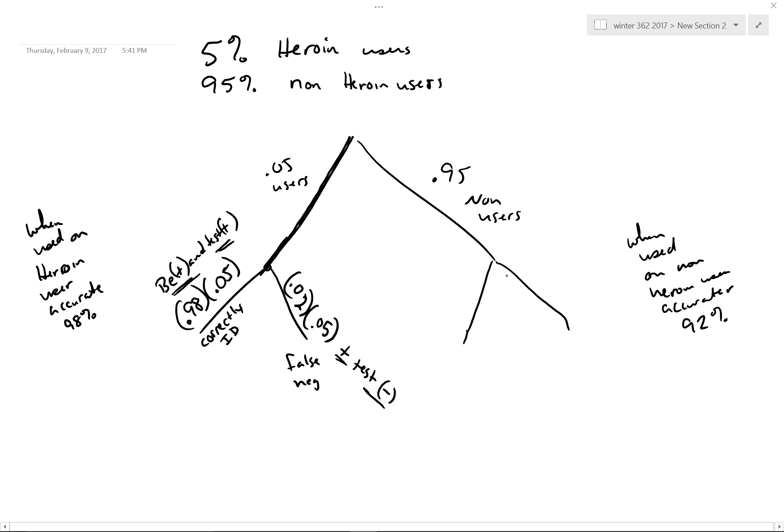All these people over here are non-users. So what we're going to say is 92% of the 95% are identified correctly. These are ID'd correctly. That is, they are negative and they test negative.